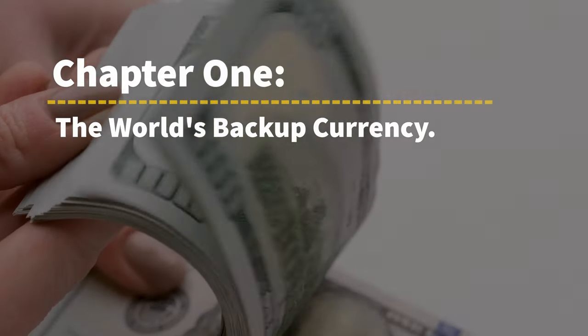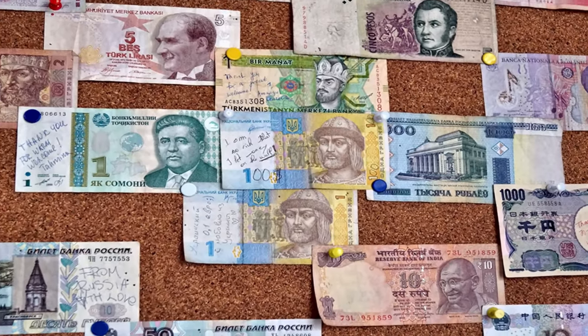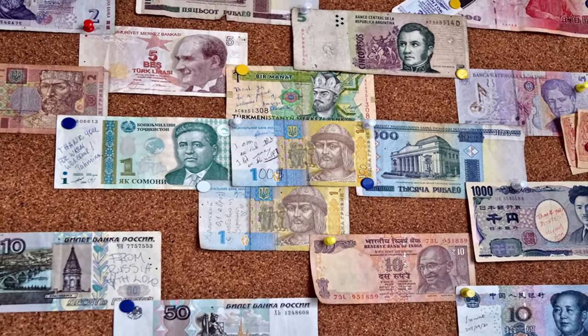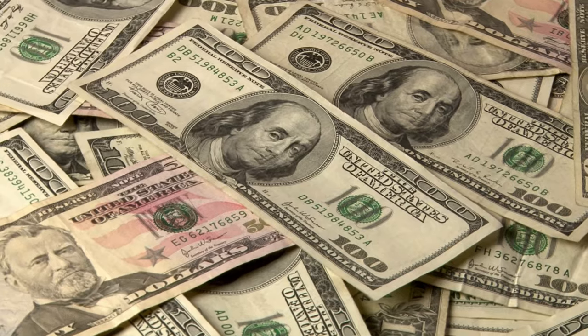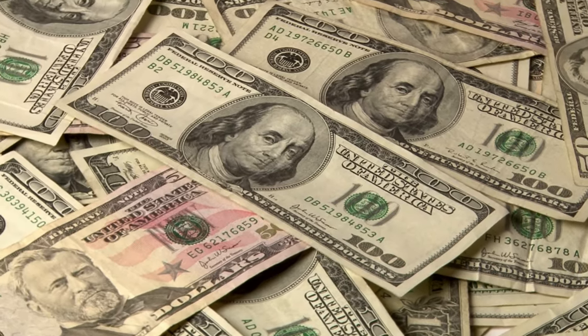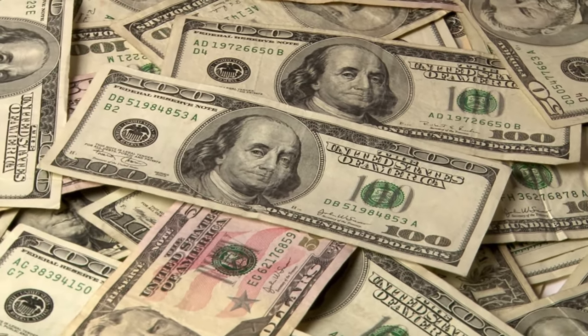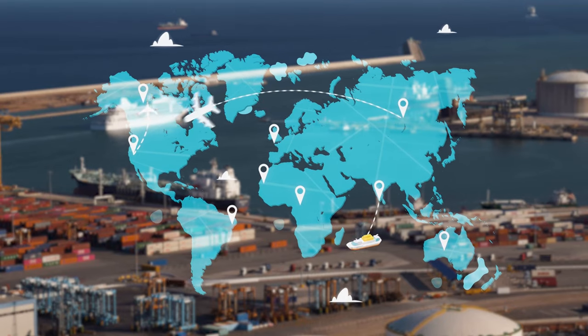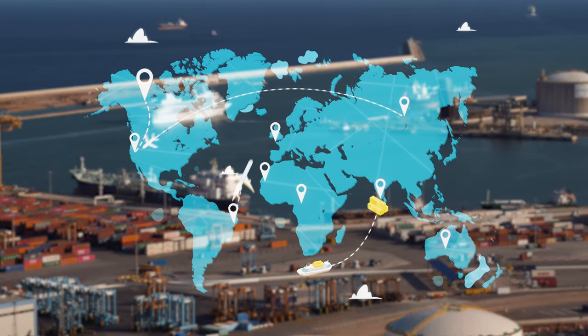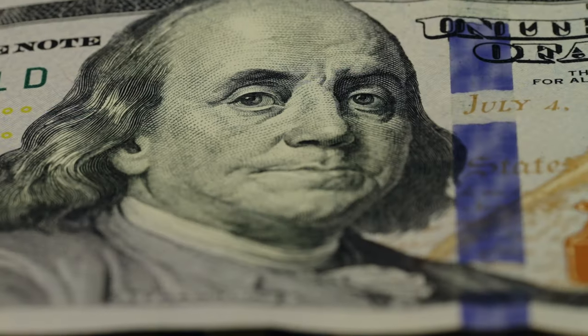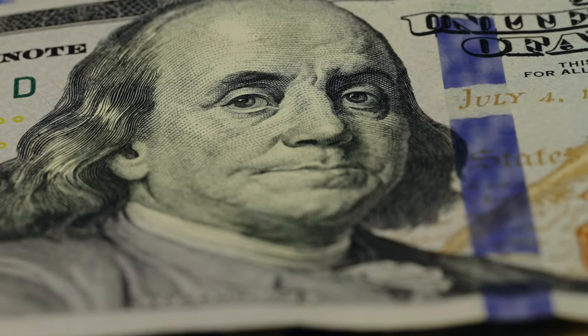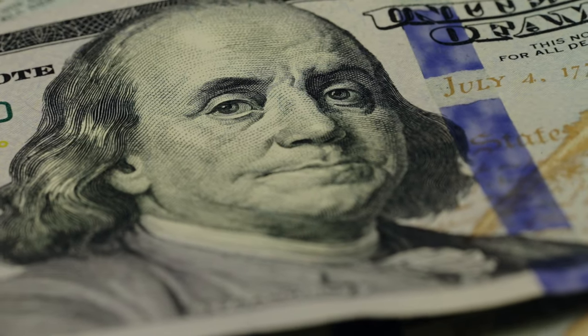Consider the difference between a regular piece of paper and a dollar bill. Both are pieces of paper, but ordinary paper has no value. Yet the world bows down to the US dollar because it is a world currency — a currency that can trade with other currencies outside its home country. But how did Benjamin Franklin's photo on a note become the world's reserve currency?